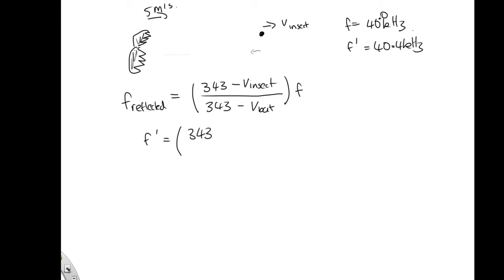Now in this case, our bat is our observer, and it is moving towards the reflective wave. So we'll have a plus the velocity of the bat.